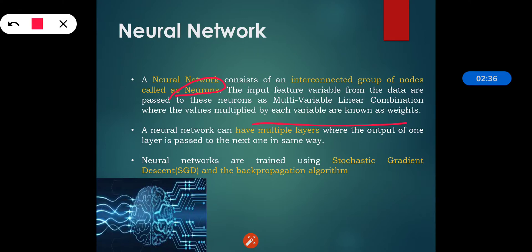A neural network can have multiple layers where the output of one layer is passed to the next one. Neural networks generally have an input layer, output layer, and hidden layers. It is a combination of various layers where the output of the first layer is passed to the second layer. In some networks, the last output is again given as input to the first layer.